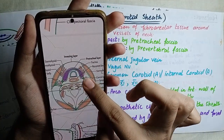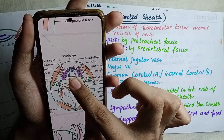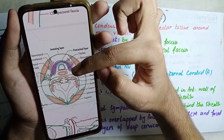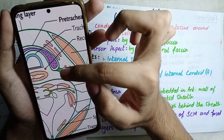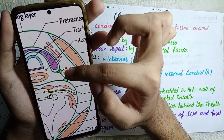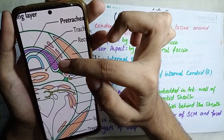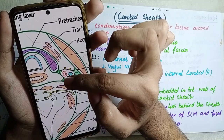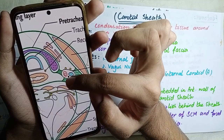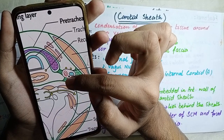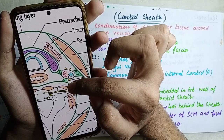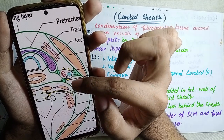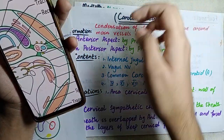The pre-tracheal fascia encloses the thyroid gland. The pre-tracheal fascia is laterally related to the carotid sheath. The anterior layer of the carotid sheath is formed by the pre-tracheal fascia, and the posterior layer of the carotid sheath is formed by the pre-vertebral fascia. We have now covered the formation of the carotid sheath.